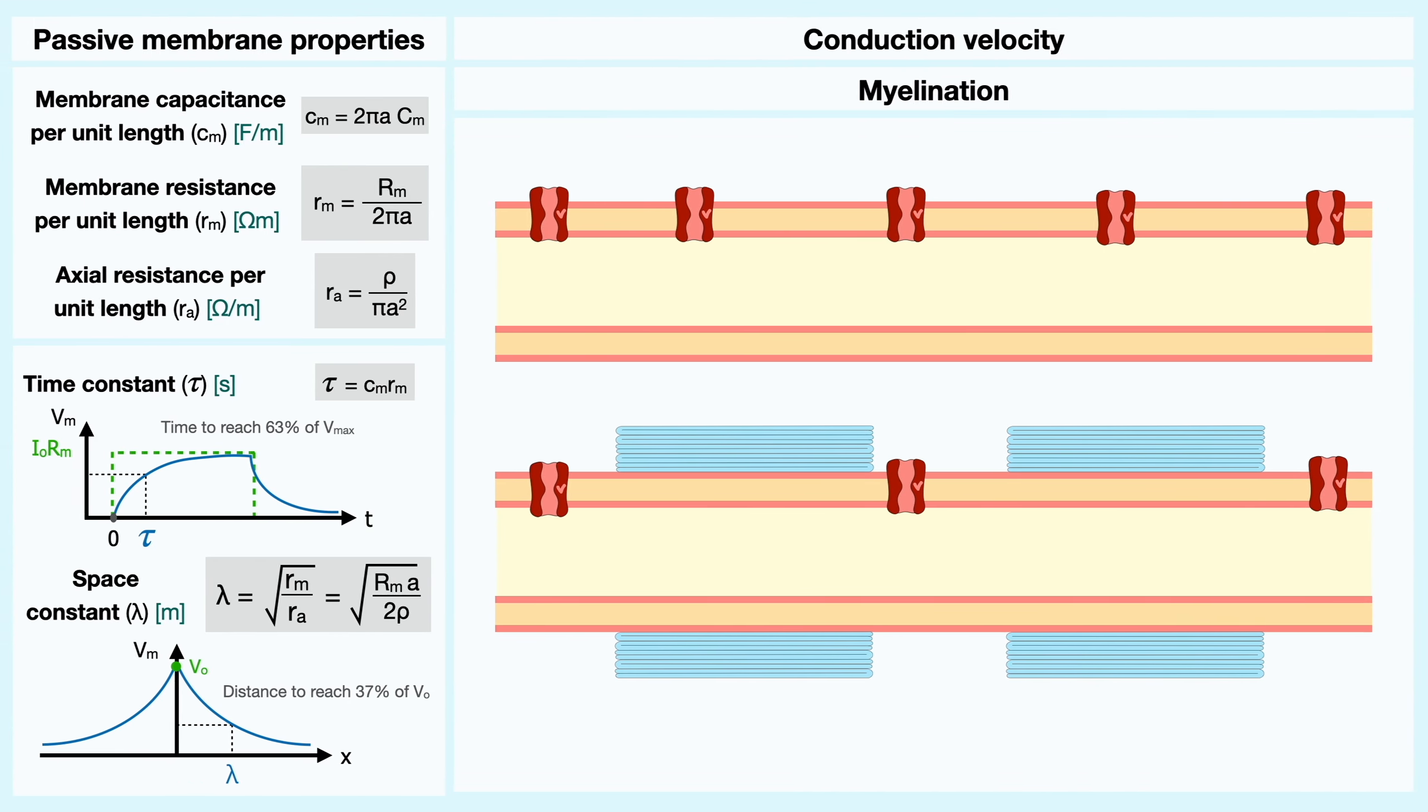Back to our passive membrane properties, let's consider two axons of the same diameter, but one myelinated and the other not to see how myelination impacts the conduction velocity.